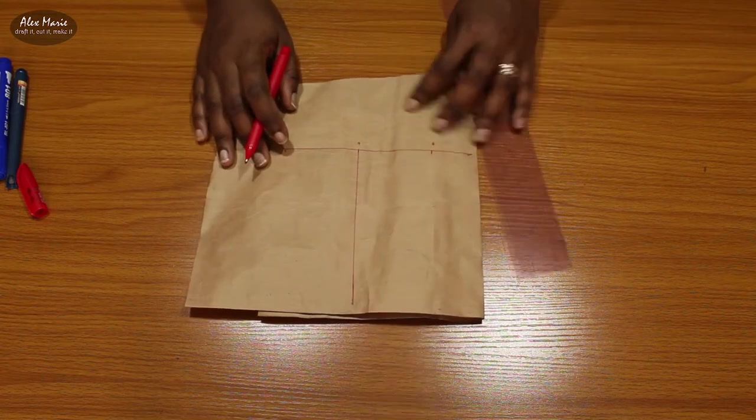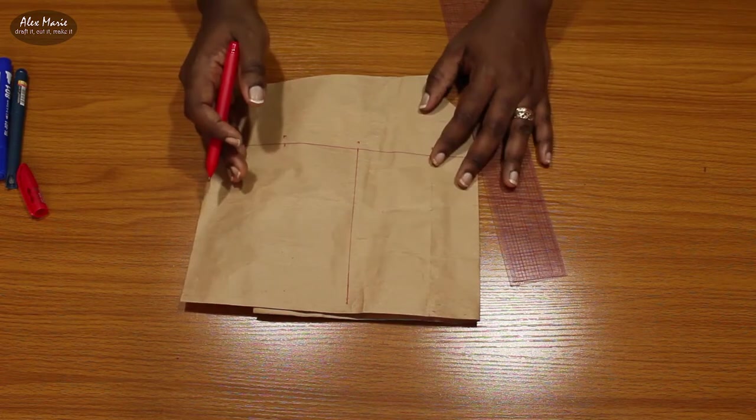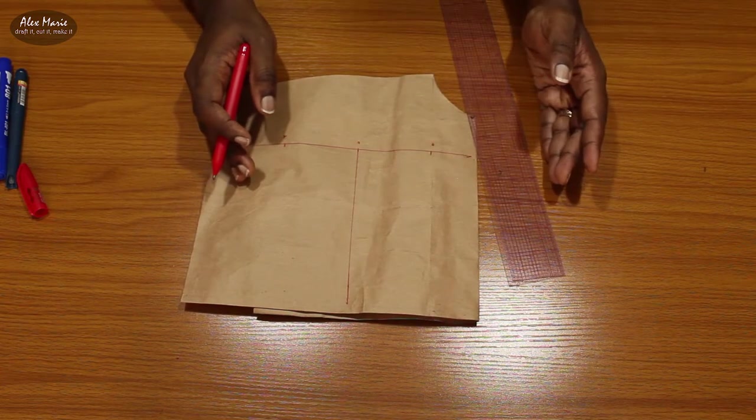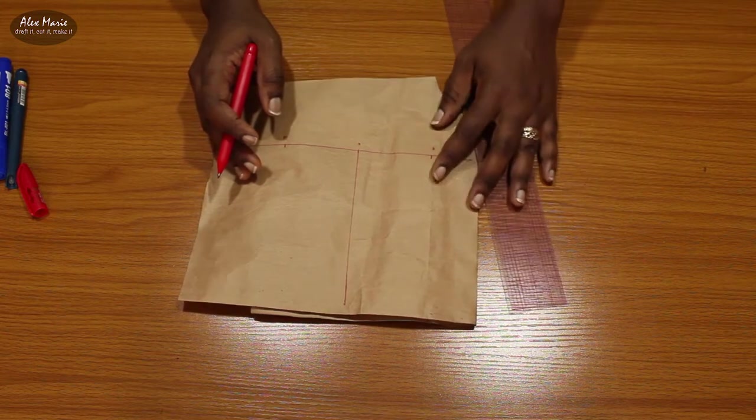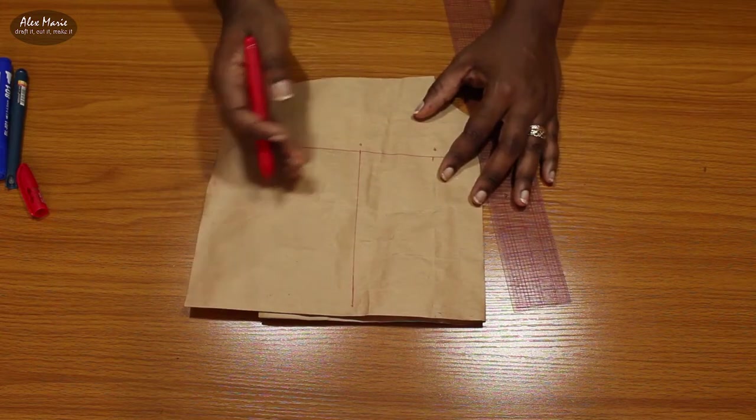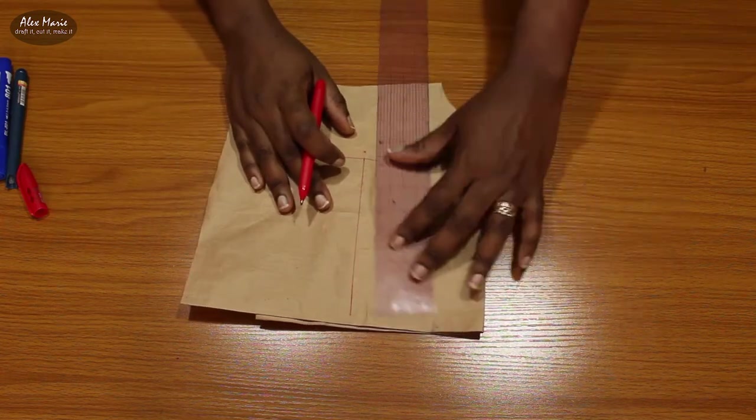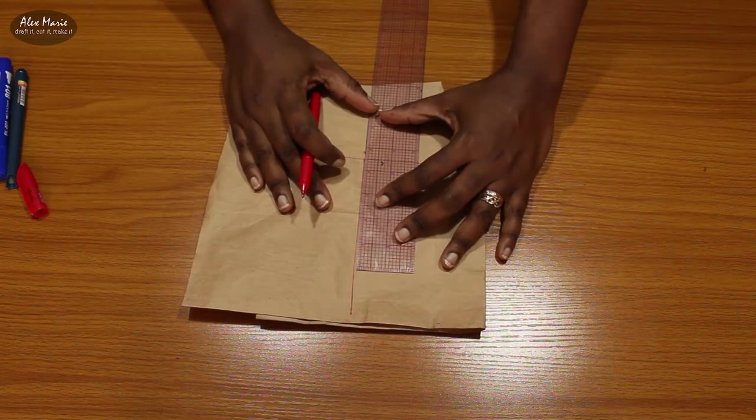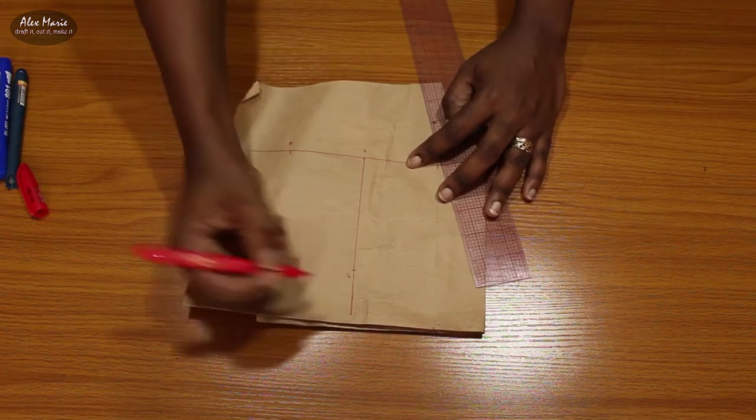Now on this, the cheek to cheek measurement you took, you're going to divide that in two. So my cheek to cheek is about nine inches, it could be smaller, you can make it eight, it depends on your face and all that. Nine inches divided by two is 4.5, so I'm going to put 4.5, mark that off. Let's call that point D.